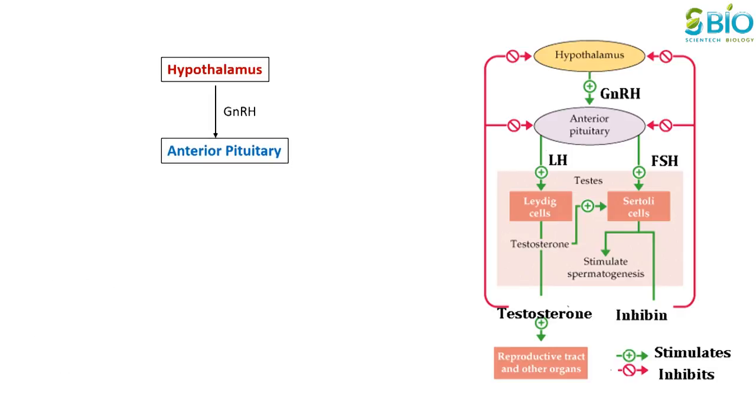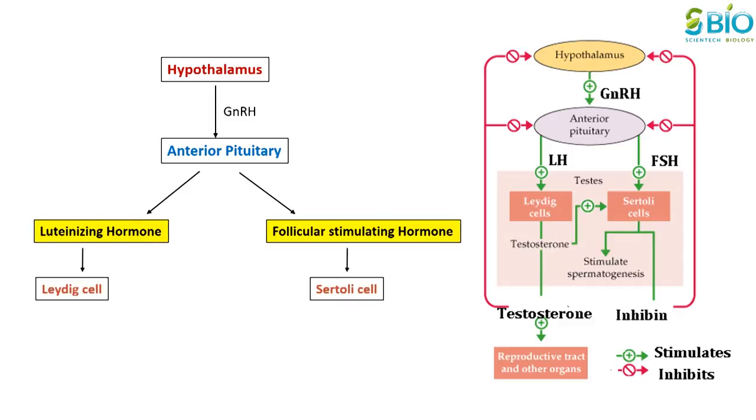GnRH acts on the anterior pituitary to secrete luteinizing hormone or LH and follicle stimulating hormone or FSH. FSH stimulates the production of androgen binding protein or ABP. ABP is essential to concentrating testosterone levels high enough to initiate and maintain spermatogenesis.